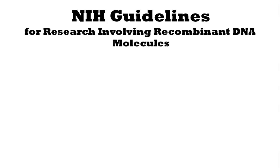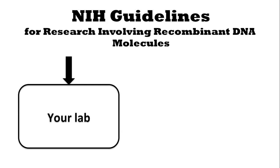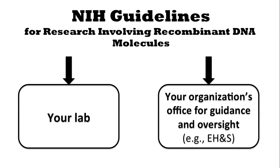We look to the NIH guidelines for research involving recombinant DNA molecules. And by we, I mean your lab, but also your organization's Office for Guidance and Oversight. At UC Berkeley this is called Environmental Health and Safety, or EH&S, but your organization will have one as well. Much of the conversation is between the two of you. While you should both be aware of the NIH guidelines, the Office is there to help guide you in determining how they apply to your research.